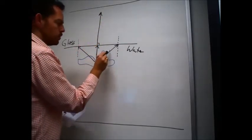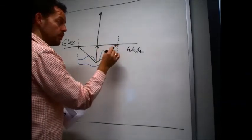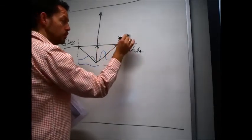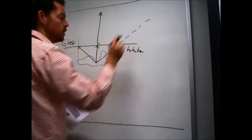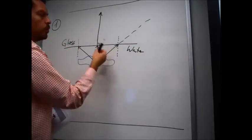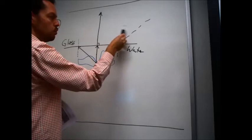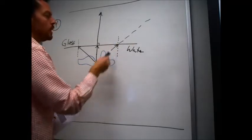The next one would travel straight through if there's no interface whatsoever. It would want to travel straight on like that. Now there's an interface, so it will be bent either towards or away from the normal. In this case...